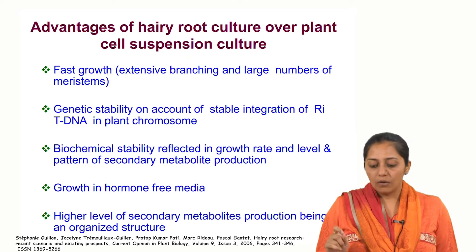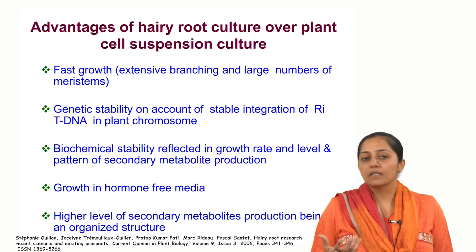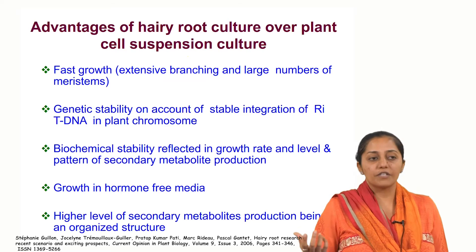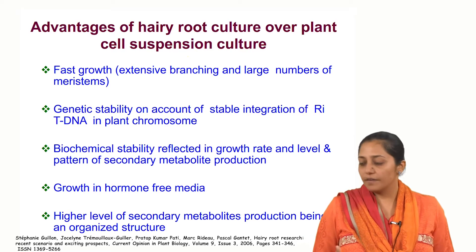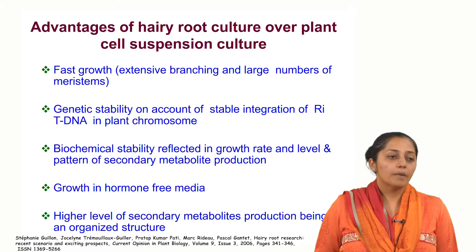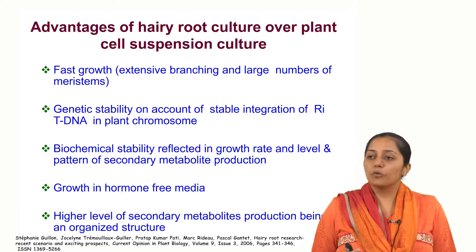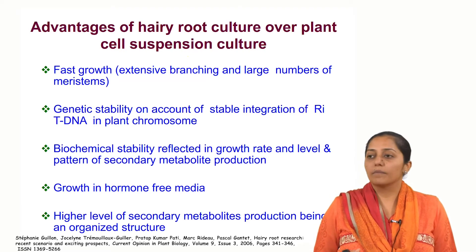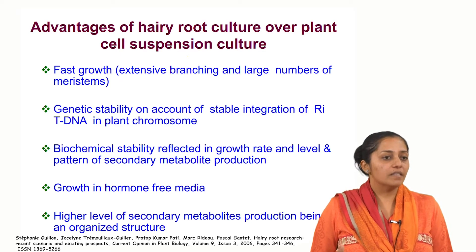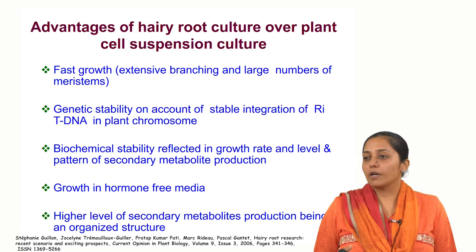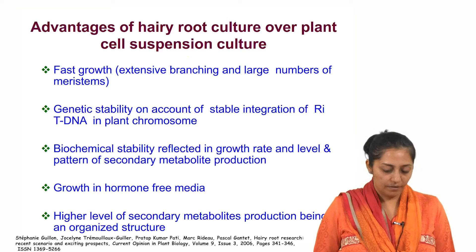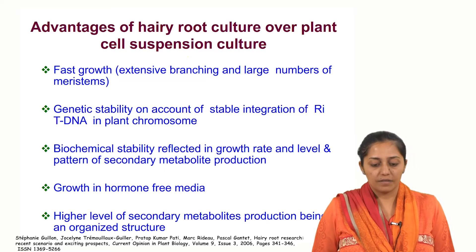Then biochemical stability because there is organization — an organized structure. So there is higher secondary metabolite yield. Moreover, because they are neoplastic in nature, there are no hormones required because auxin synthesizing genes are already present. So there is no requirement of hormone in the medium — making it cost effective in comparison to plant cell cultures.